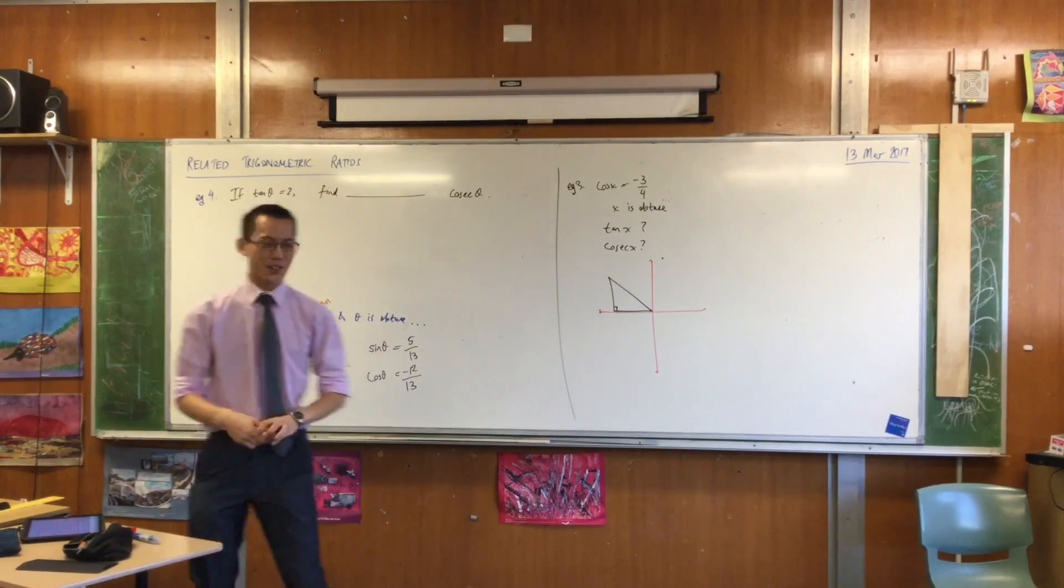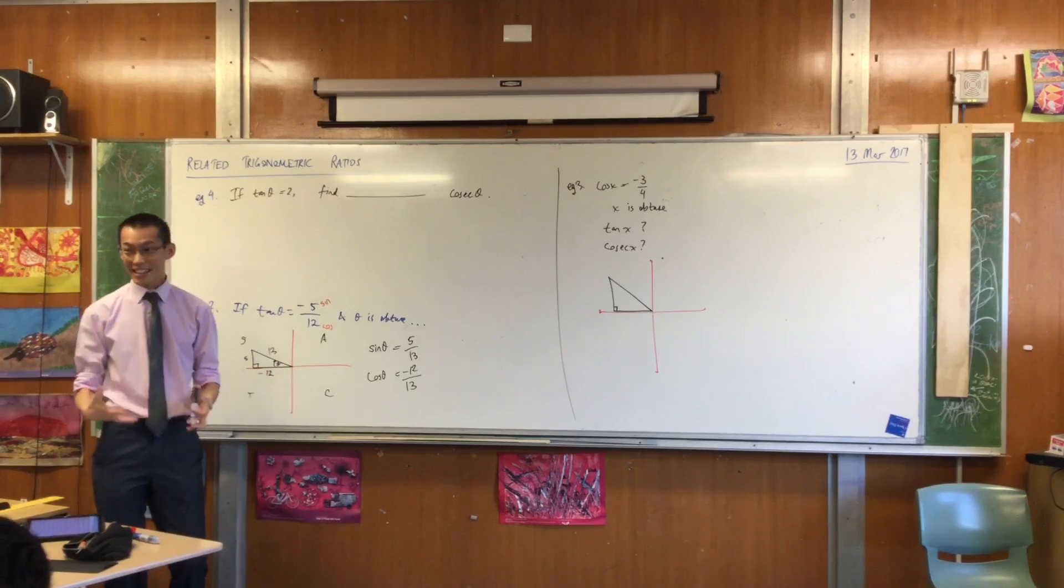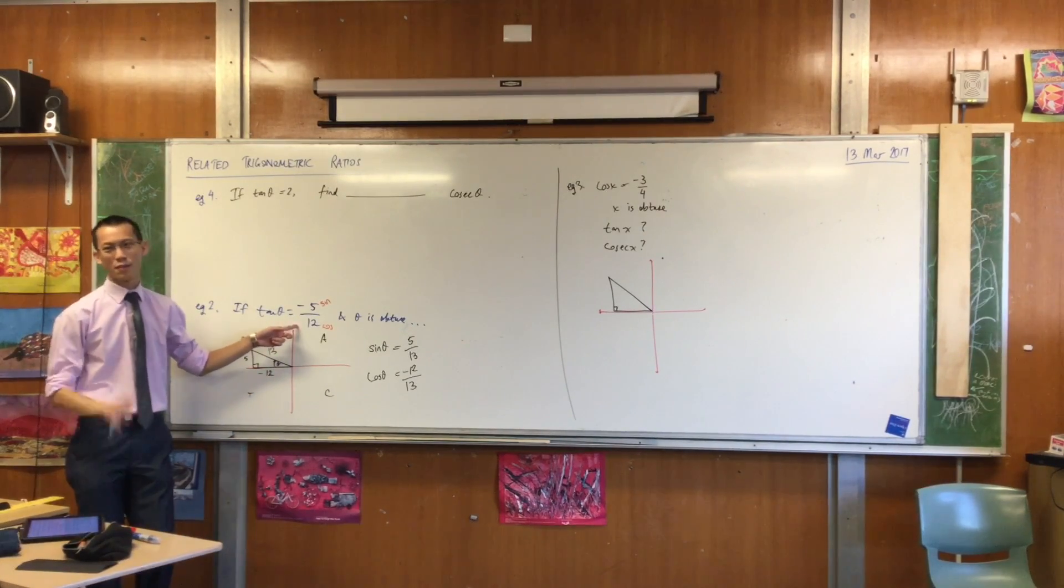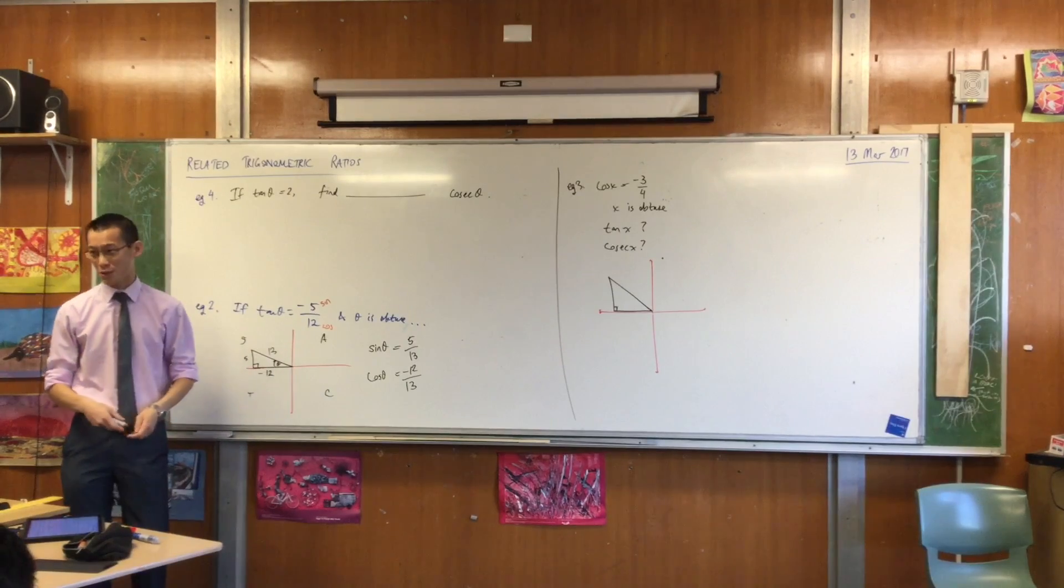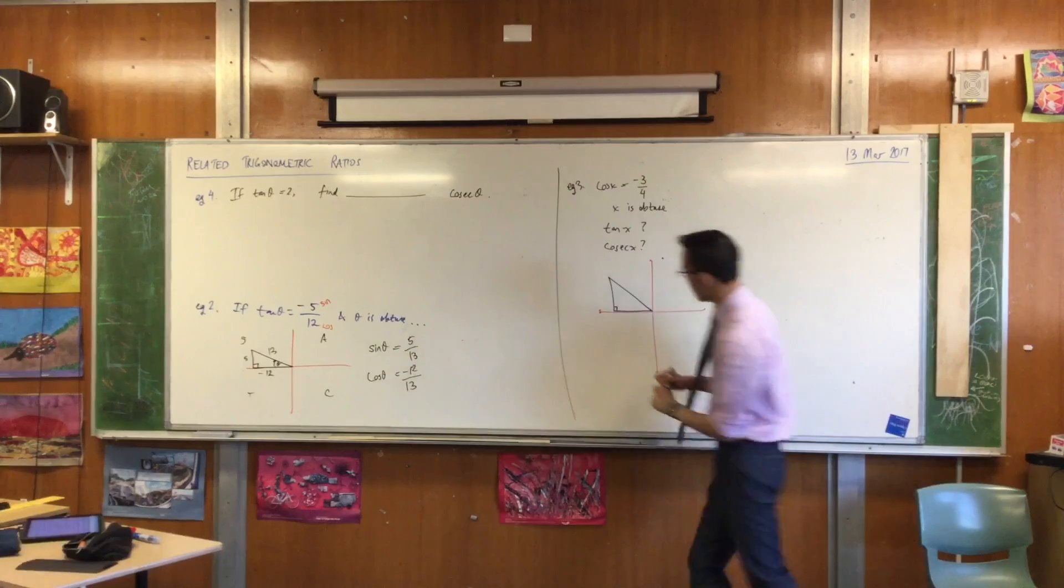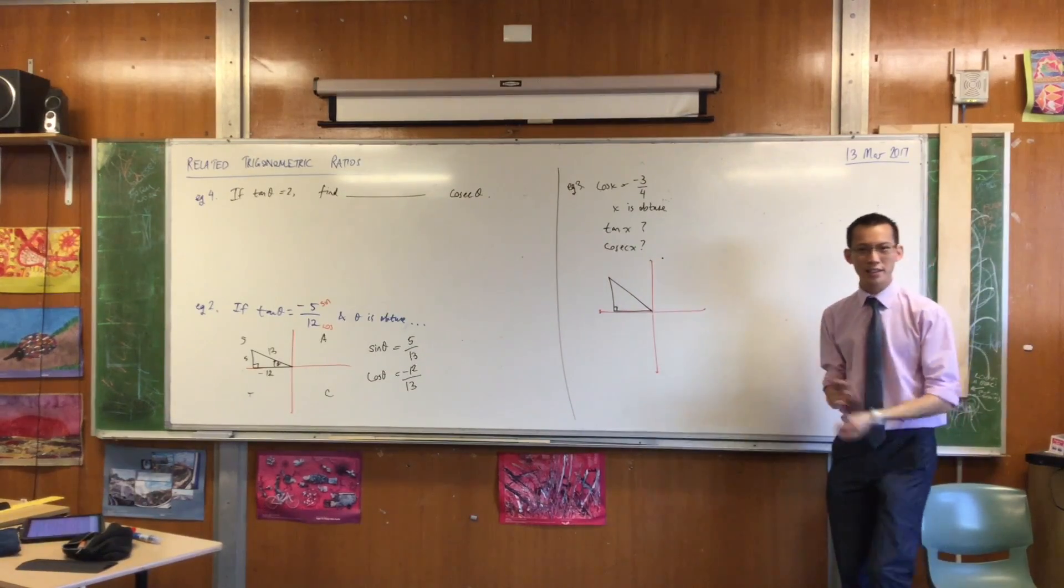Now, I threw a bit of a curveball actually, right? Because I said to you, frequently you will get nice numbers like this, frequently. But you don't always. So when it tells you cos x is minus 3 over 4, where is x, by the way, the angle x? Where would you describe it?